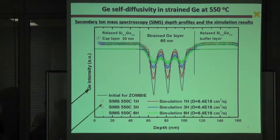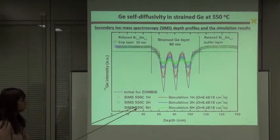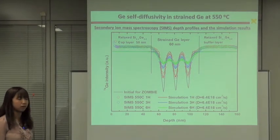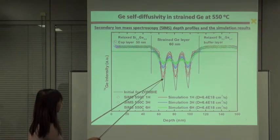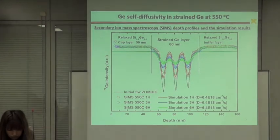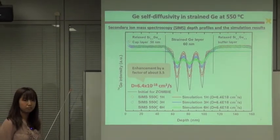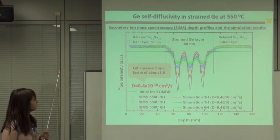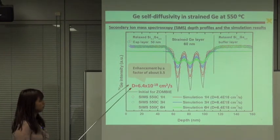And this is the secondary ion mass spectroscopy, or SIMS, depth profiles of 74Ge in the samples before and after 550 degrees annealing for 1 to 6 hours, and the simulation results by using ZOMBIE, which is a partial differential equation solver. And there are good agreements between SIMS results and the simulation results. And we obtained a value of 6.4 times 10^-18 cm²/s as the germanium self-diffusivity in germanium at a compressive strain of 0.71%. And this value is about 3.5 times higher compared to unstrained germanium.